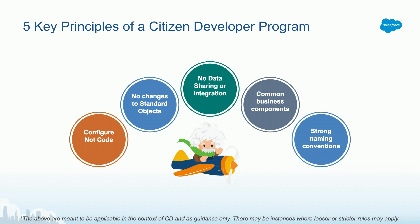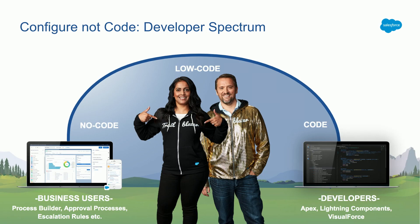Another thing we recommend is strong naming conventions. That allows people to differentiate between what's been built by a citizen developer and what's been built by IT developers. We also mention common business components — that's what IT would help build to create a transition between what's happening on citizen developer projects. Configuring our code — what is that? The Salesforce platform allows business users who are candidates to become citizen developers to utilize the declarative aspect of Salesforce: things such as Process Builder, approval processes, escalation rules — the visual, declarative side. Whereas IT developers would use tools such as Apex, Lightning Components, or Visualforce.